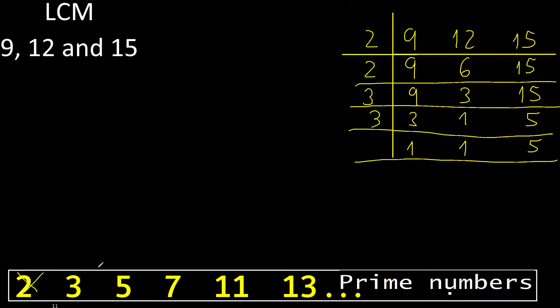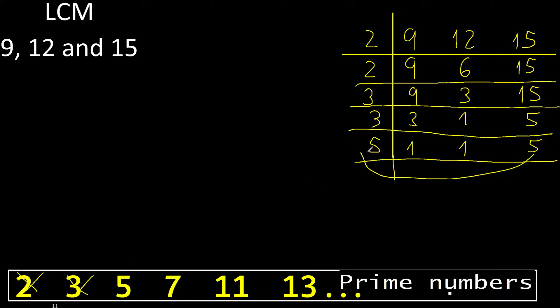10 cannot be divided by 3, but can be divided by 5. Divided by 5: 5 divided by 5 is 1. Equal. 1, 1, 1 — ok. Finish it.